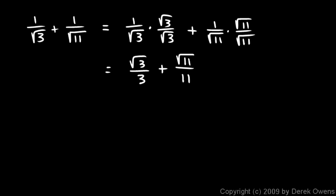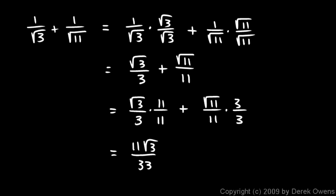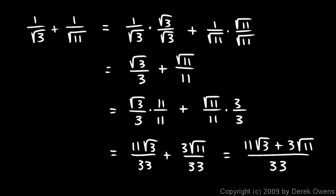Now I can combine those two if they have the same denominator, and they don't — but that's easy to take care of. I'll take the first one, square root of 3 over 3, and multiply it by 11 over 11, and take the second term, square root of 11 over 11, and multiply it by 3 over 3. When I multiply those out, I'll have a denominator of 33 in each case. So I end up with 11 root 3 over 33 plus 3 root 11 over 33, which combines as a single fraction: 11 root 3 plus 3 root 11, all over 33.